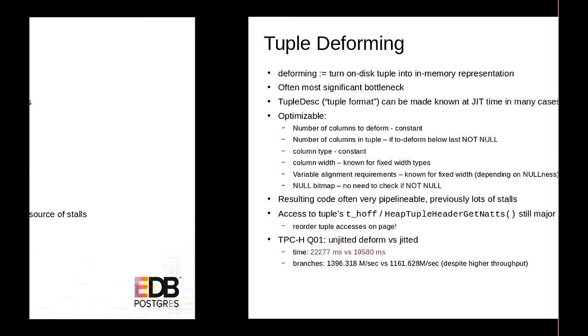Even though we do more work per second, we do fewer branches per second — precisely what we expect, because we now skip all the per-column branches. There are still lots of other branches in Postgres during query execution, so the branch count is still significant. It's still amazing that we can do one billion branches per second on a system.